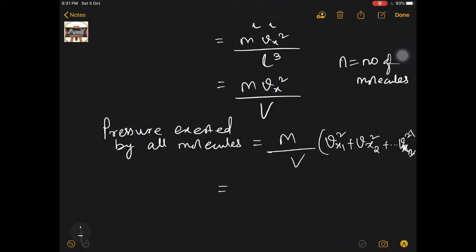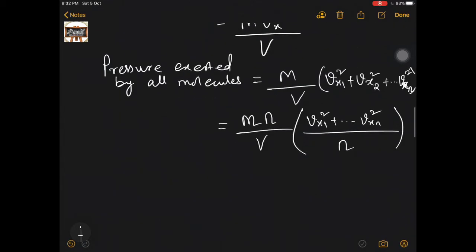I can write this expression by introducing one n in the numerator, so definitely I am introducing n in the denominator also. This is going to give me the average of all the x-components of the velocities of all the molecules.